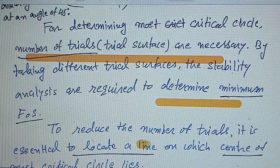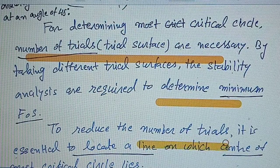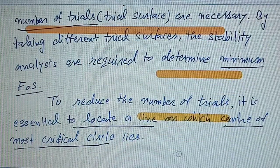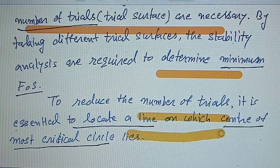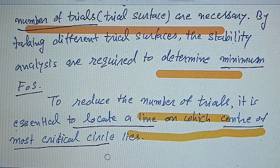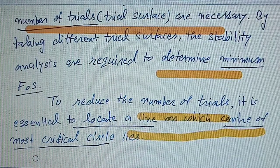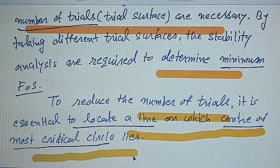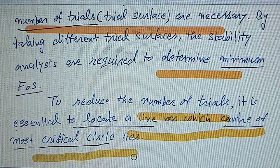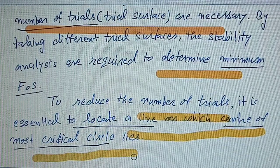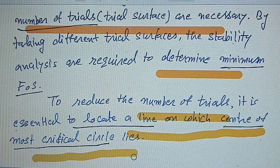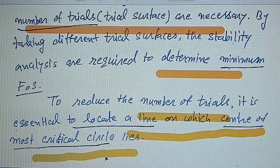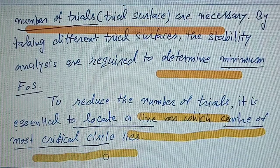To reduce the number of trials, it is essential to locate a line on which the center of the most critical circle lies. Fellenius and others give a method to determine such a line. Thank you.